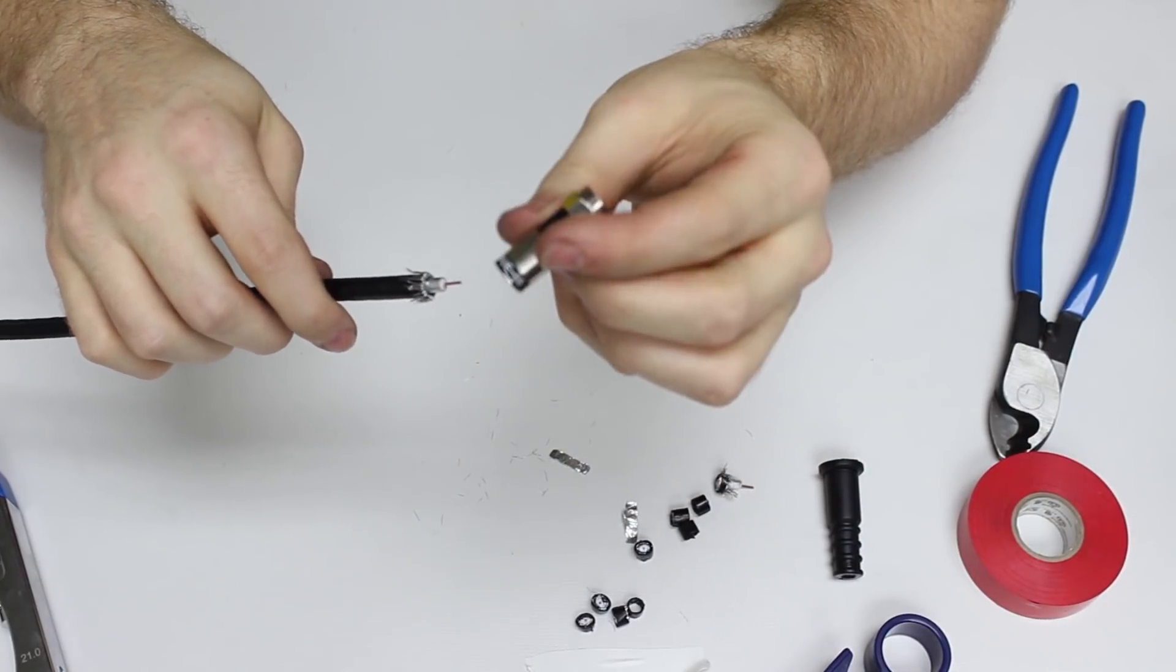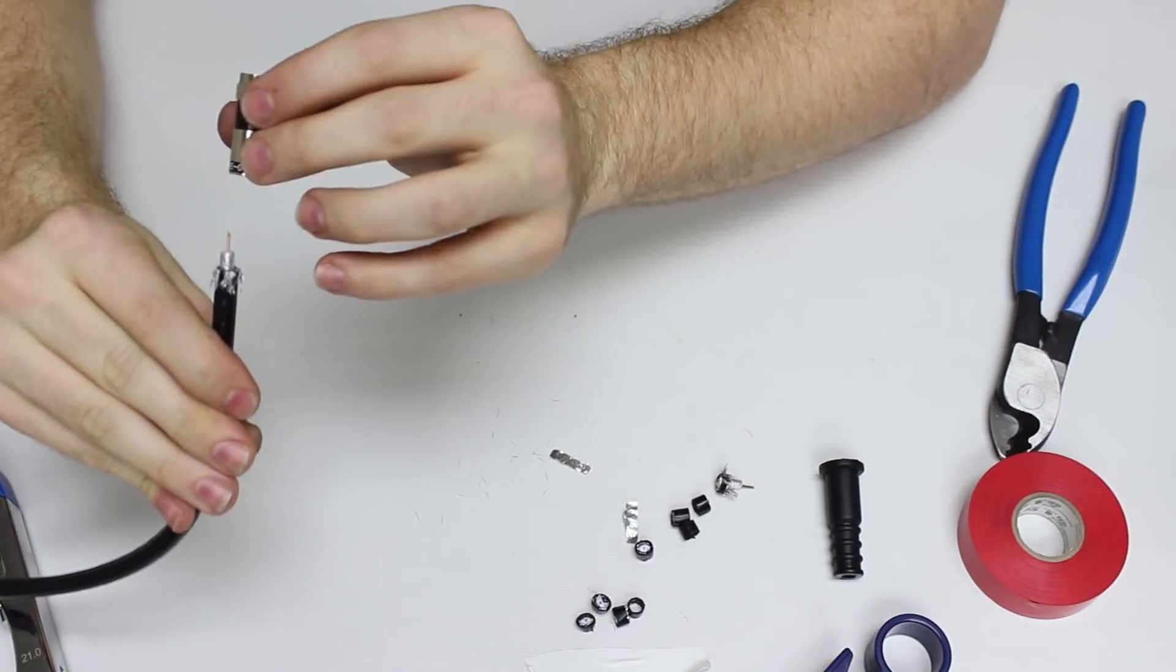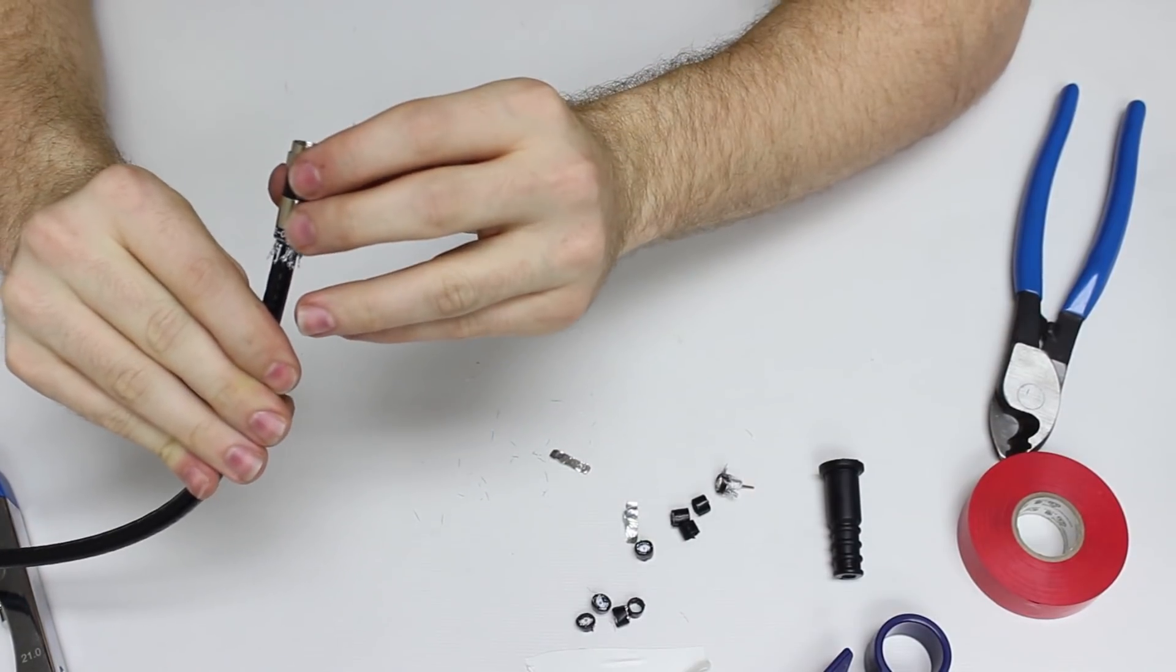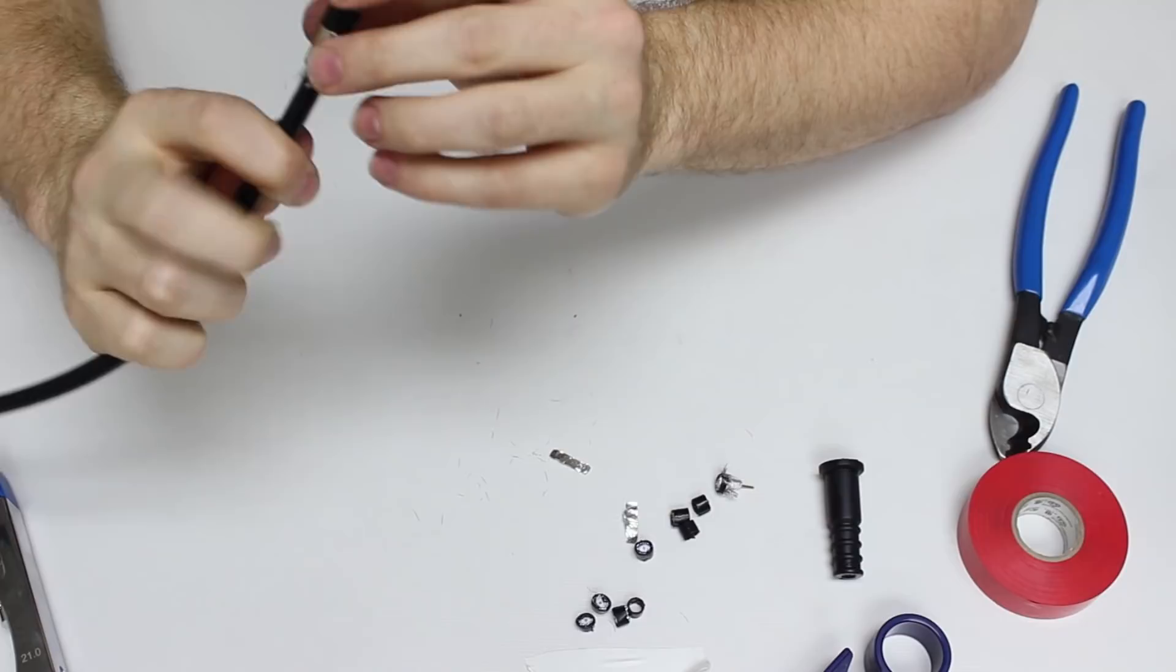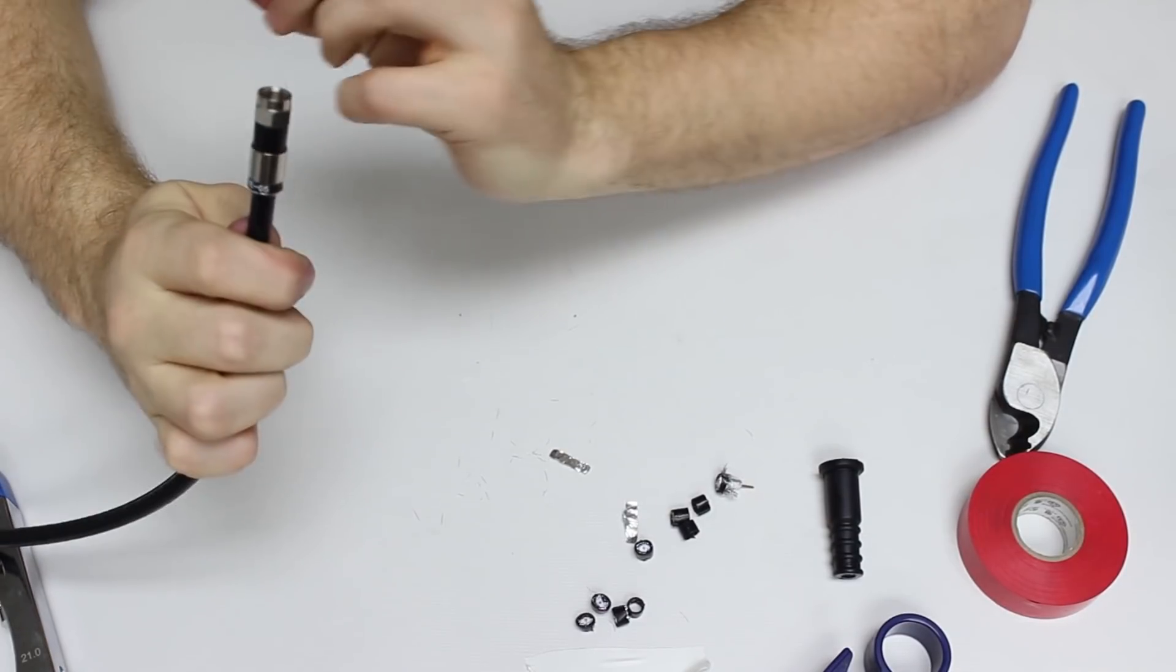You're going to take your RG6 universal connector here and you're going to go ahead and place this on the end. You just want to look at it directly head on and look down through the center of that connector and make sure you have a full moon. And it's going to snap right on there.